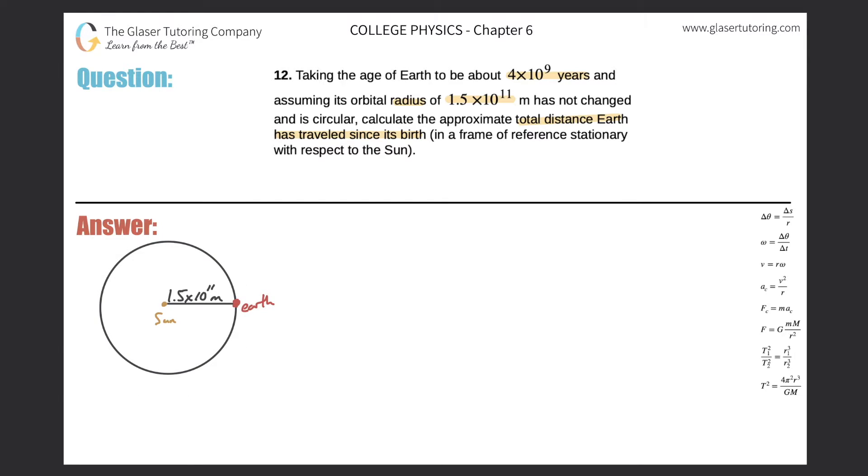And the Earth traveled a certain distance every year. And they want to know over this many years, 4 times 10 to the 9, how far has Earth traveled? So it might make sense to figure out, well, let me first figure out what the total distance that the Earth travels in a year is, and then maybe I can figure it out over 4 times 10 to the 9 years.